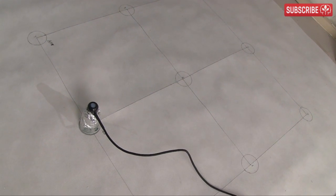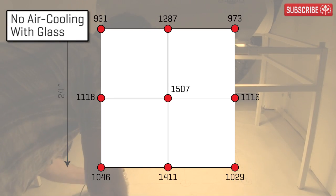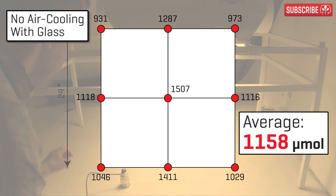So on to the results. Let's remember our benchmark: the PAR readings with the glass cover on and no cooling, the average over the nine points was 1,158 micromoles.